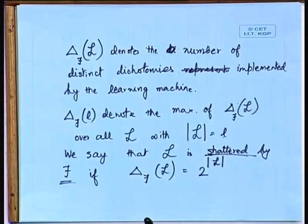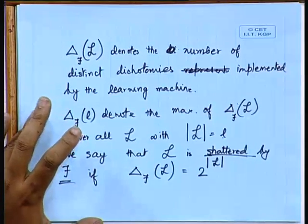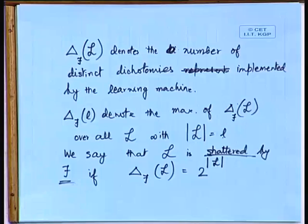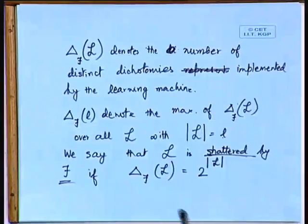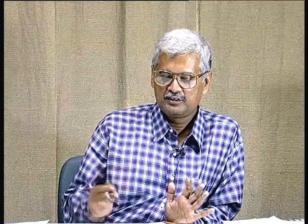So if the set of rules spans all different possibilities — if the distinct dichotomies equal 2^l where l is the cardinality — then that space is shattered. We will give several shattering examples that will be made more clear in the coming class. Thank you very much.